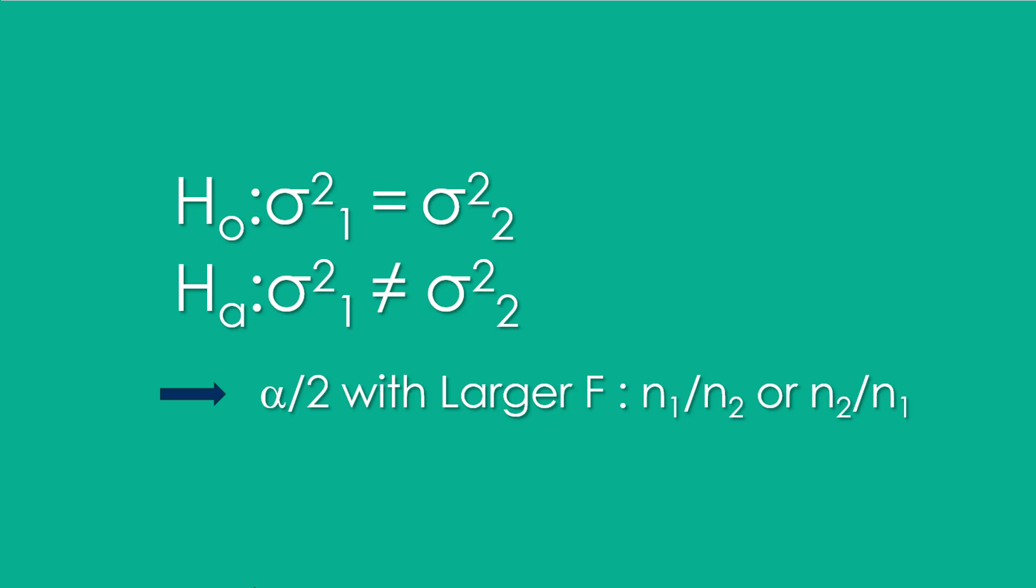But when we deal with the F distribution we're always working with the right tail. Because this is a two tail test we just divide alpha, the significance level, by 2 and put all of it in that right tail to find our critical value of F. Our dilemma is that we want our critical F value to be as large as possible and that means the larger variance must be the numerator.